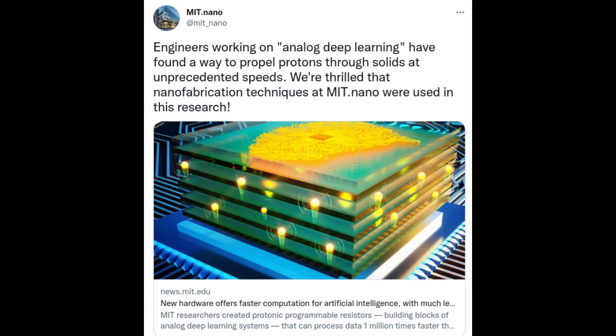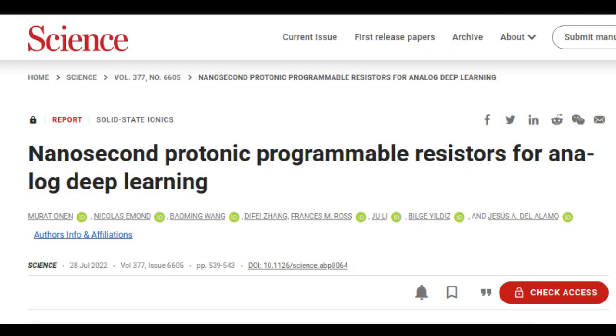A new area of artificial intelligence called analog deep learning promises faster computation with a fraction of the energy usage. Programmable resistors are the key building blocks in analog deep learning, just like transistors are the core elements for digital processes.